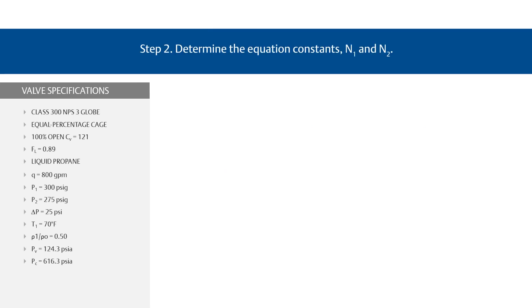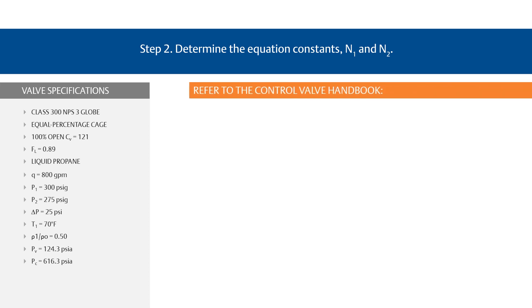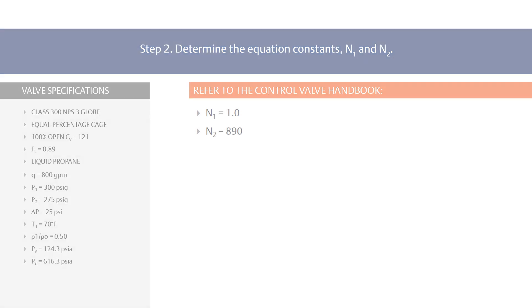Step 2: Determine the equation constants N1 and N2. From the equation constants table in the control valve handbook, N1 equals 1.0 and N2 equals 890.